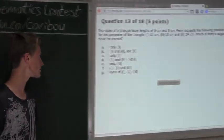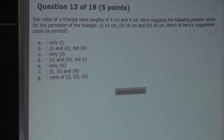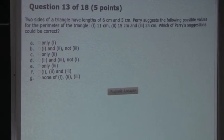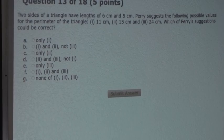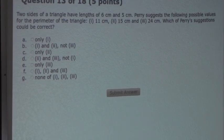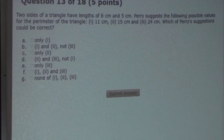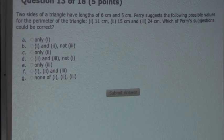So the question is: Two sides of a triangle have lengths of 6 cm and 5 cm. Perry suggests the following possible values for the perimeter of the triangle: (i) 11 cm, (ii) 15 cm, and (iii) 24 cm. Which of Perry's suggestions could be correct?